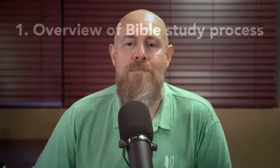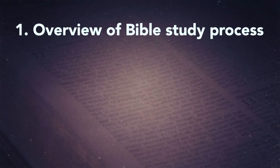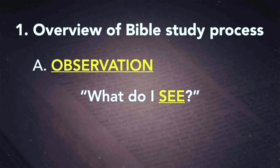Let's go to point number one on your outline: the overview of the Bible study process. Letter A is observation — here's the first step. The question is: what do I see in the passage? This is kind of a brainstorm session. I get into God's Word and, similar to brainstorming, I take a piece of paper and write things down — my observations. Who's in the passage? Who's being talked about or addressed? Who's doing the speaking? What are they talking about? What's the context? What are the facts I'm observing in this passage as I read it?